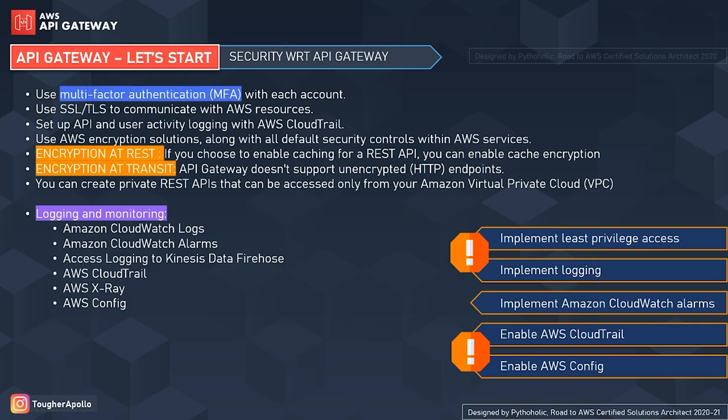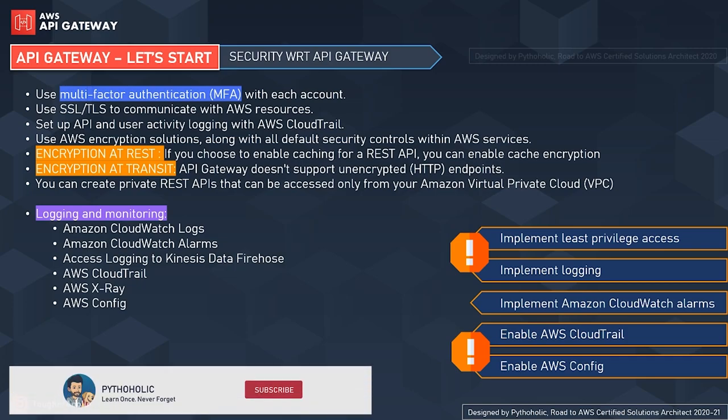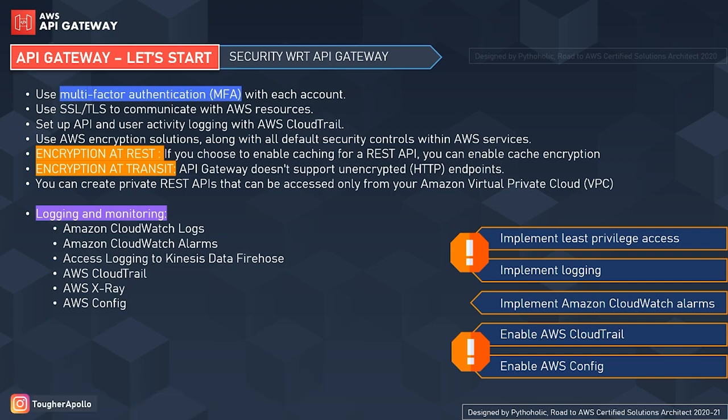The five rules of thumb for API Gateway: first, implement least privilege access — give minimum access to users at the start and increase privileges as requirements grow. Second, implement logging always. Third, implement Amazon CloudWatch alarms. Fourth, enable AWS CloudTrail. Fifth, always enable AWS Config. These are the rules you must remember when creating APIs using API Gateway.